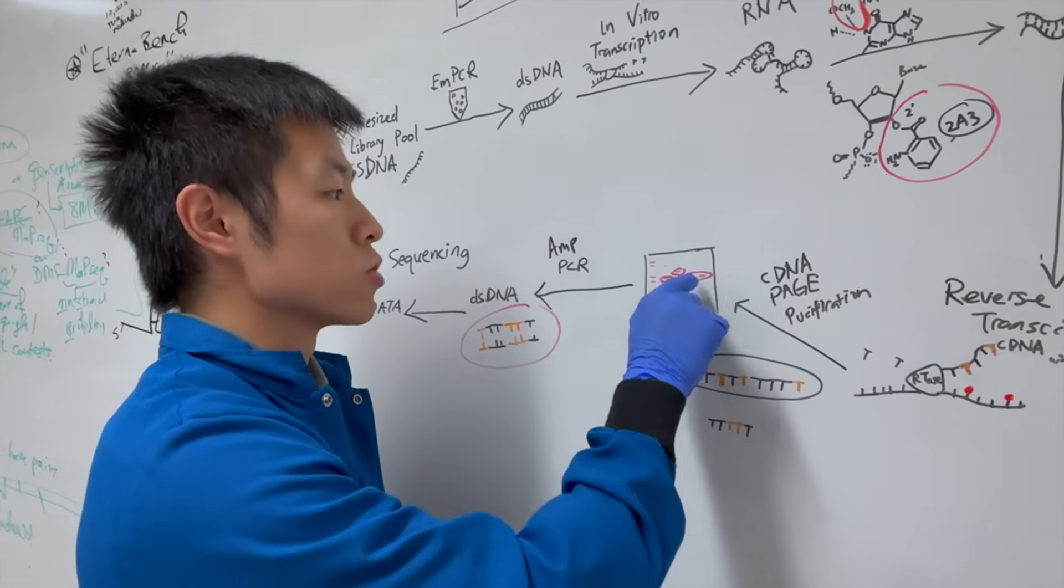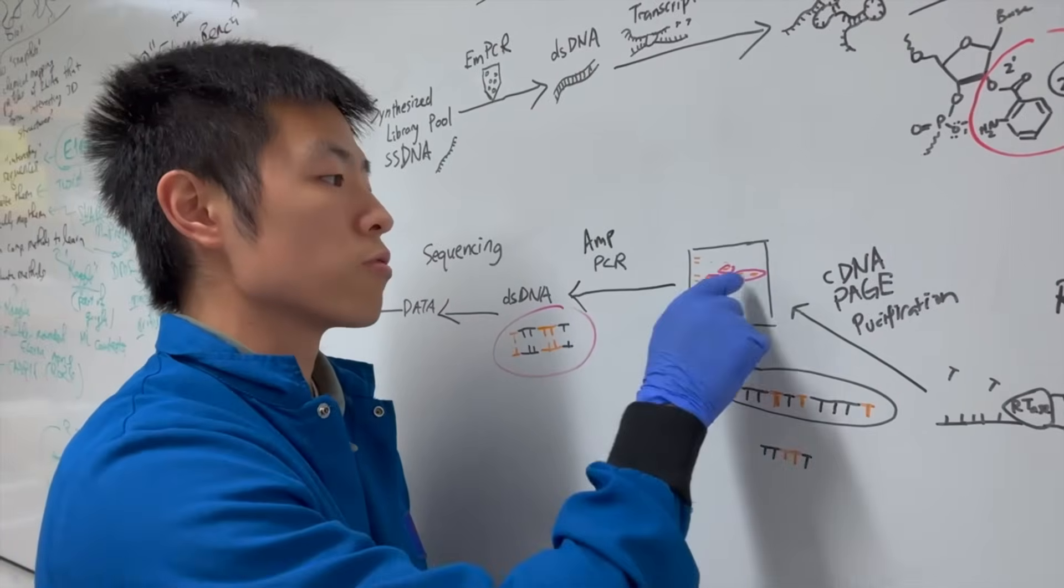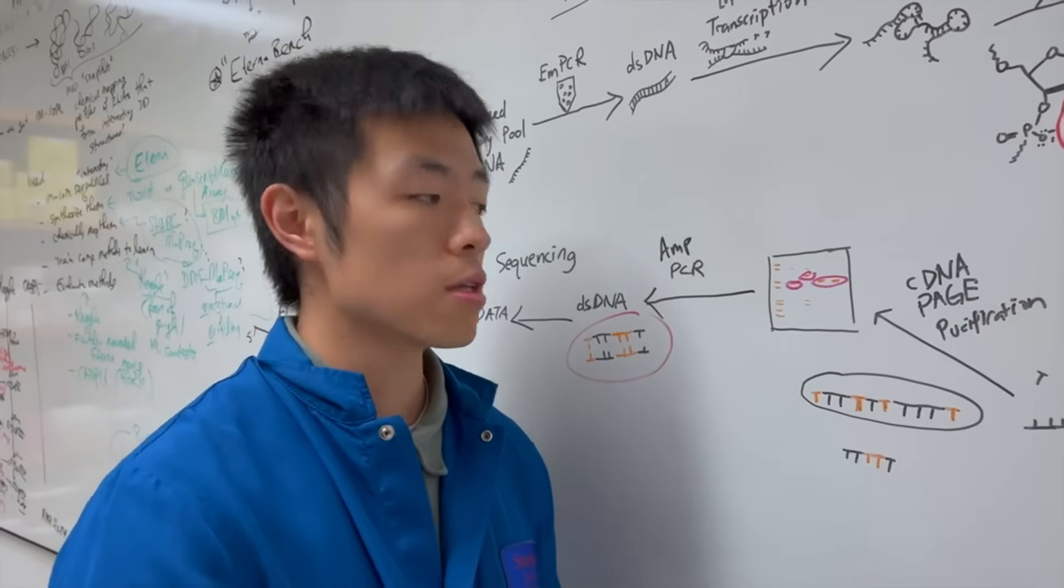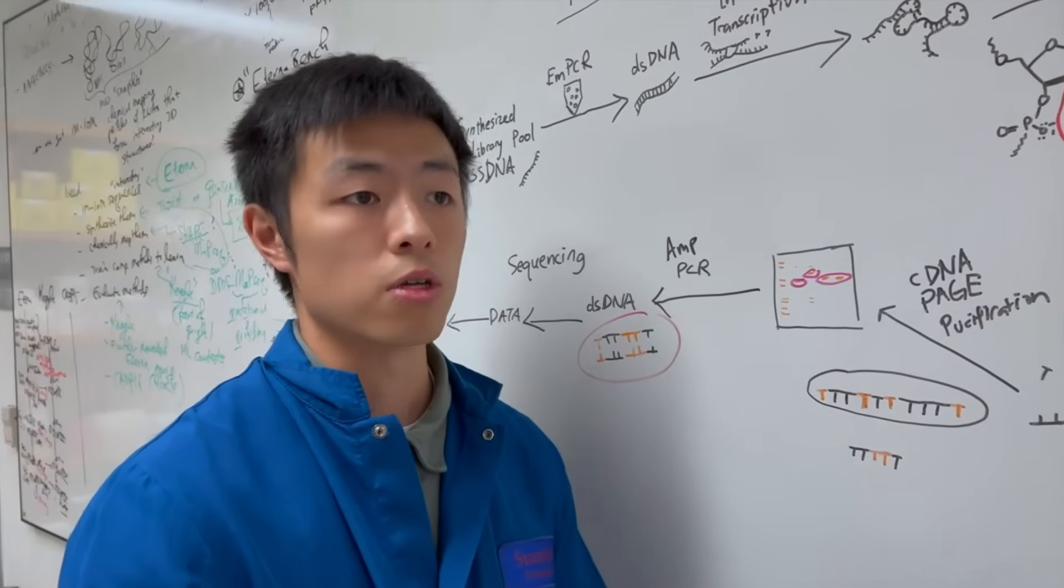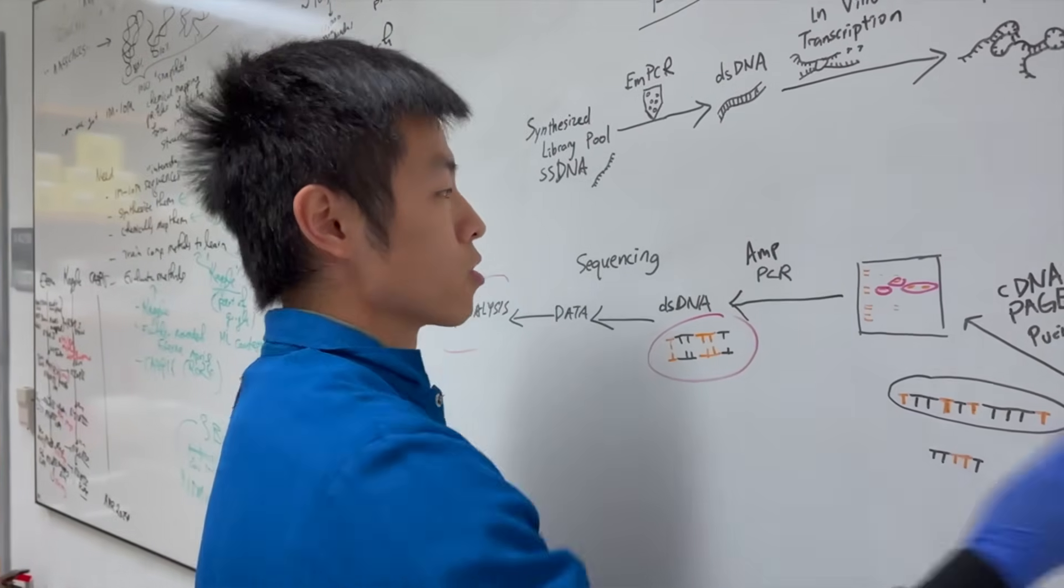So, here we take a look, and we're just going to cut and extract the cDNA in the right size. So, this process is done to make sure that we get the right size of the cDNA and also to get rid of the impurity or off product that's generated through the reverse transcription.